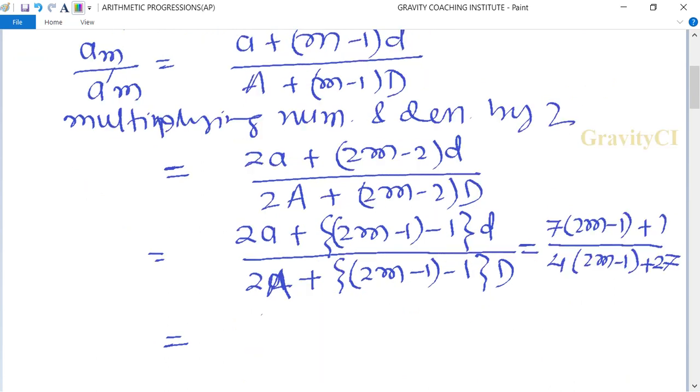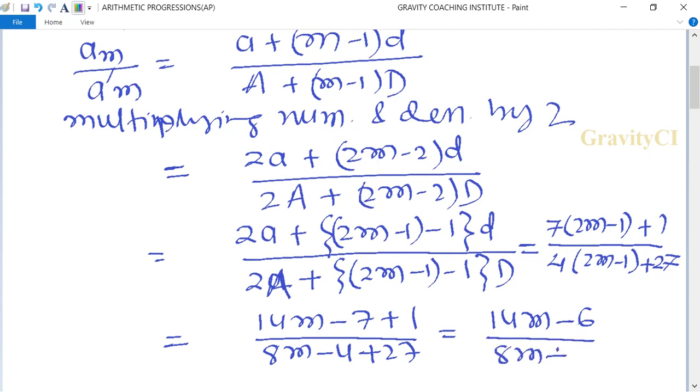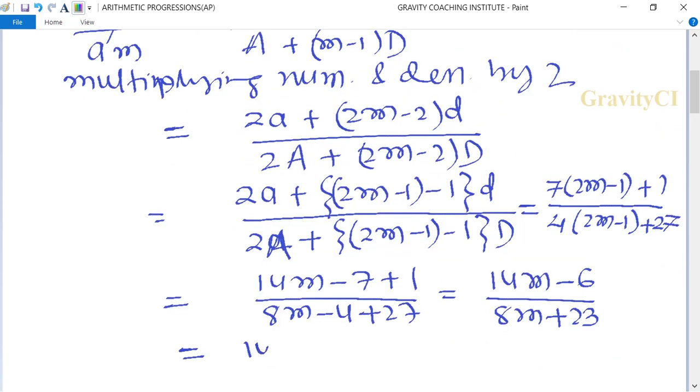This equals (14m-7+1) upon (8m-4+27), which equals (14m-6) upon (8m+23). So the answer is 14m-6 ratio 8m+23.